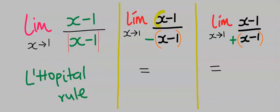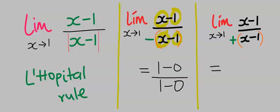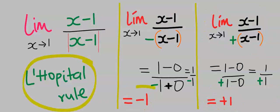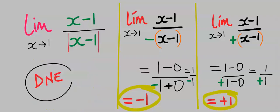Next, let's apply L'Hôpital's rule. Differentiating x gives 1, and differentiating 1 gives 0. Similarly, differentiating x gives 1, and differentiating 1 gives 0. We are left with 1 divided by minus 1, which is minus 1. Differentiating the other case as well, we get plus 1. And you can see that by applying L'Hôpital's rule, both are not equal. Hence, this limit does not exist.